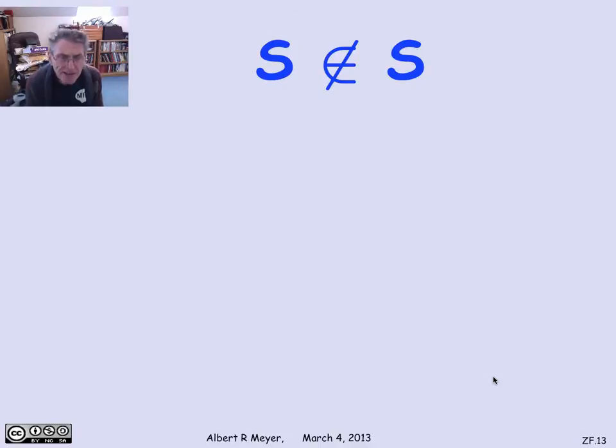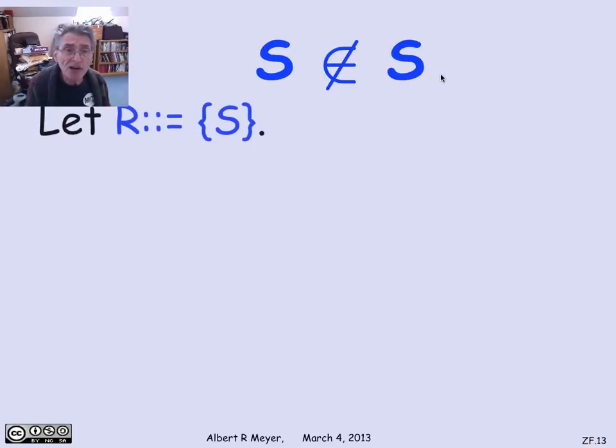What has the foundation got to do with membership? The foundation axiom will very quickly let us conclude that no set is a member of itself. How does that work? Suppose that you are interested in some set and you'd like to verify that this set can't be a member of itself.